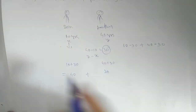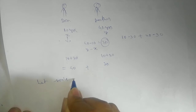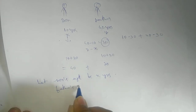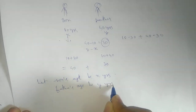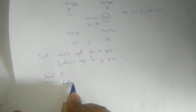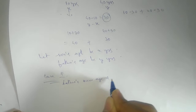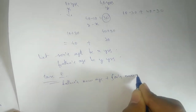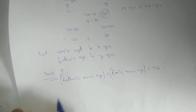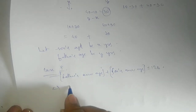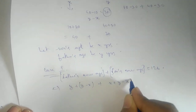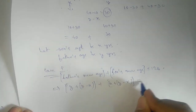So let's proceed. Let the son's age be x and the father's age be y years. Then according to Case 1, the father's new age plus the son's new age equals 126. The father's new age will be y plus (y minus x), and the son's new age is x plus (y minus x).